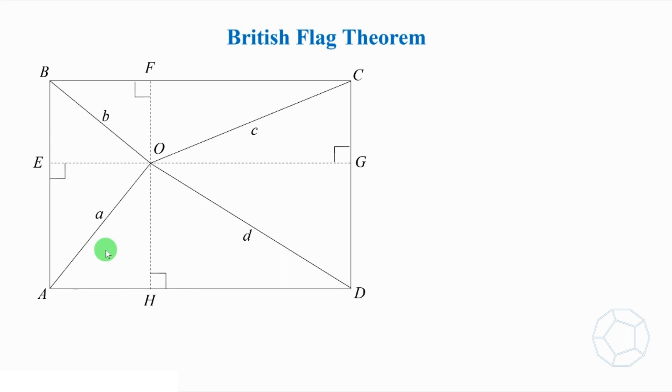For convenience, let's label the lengths of the sides as w, x, y, and z. Then, we can apply Pythagorean theorem in four triangles.